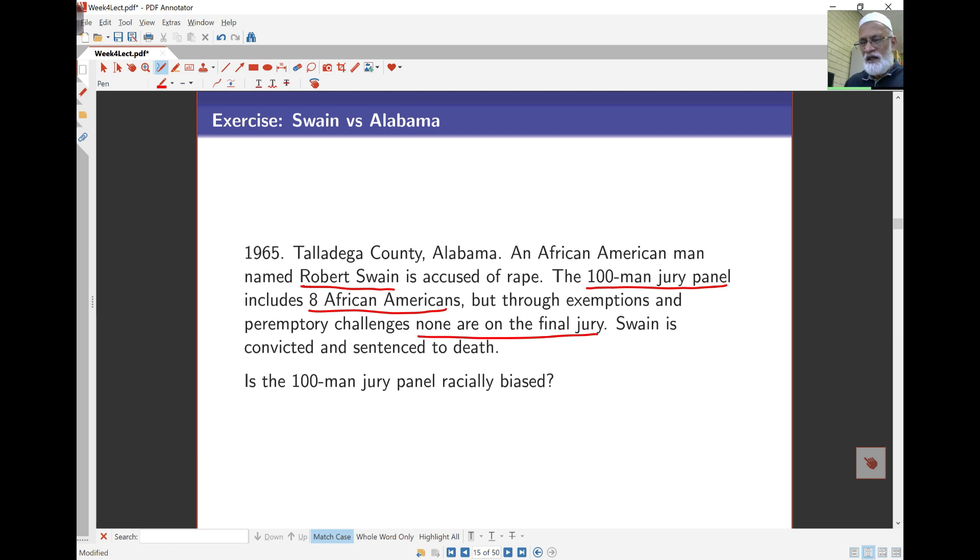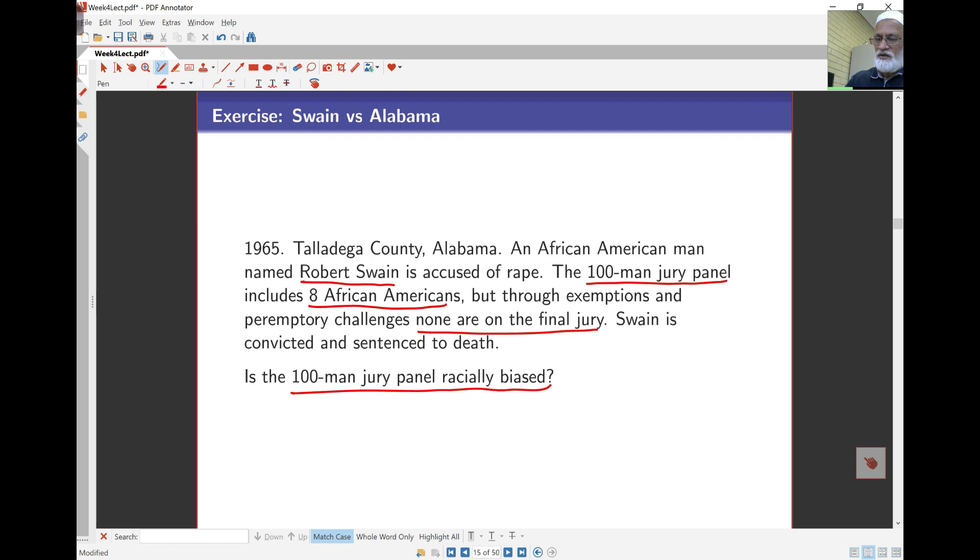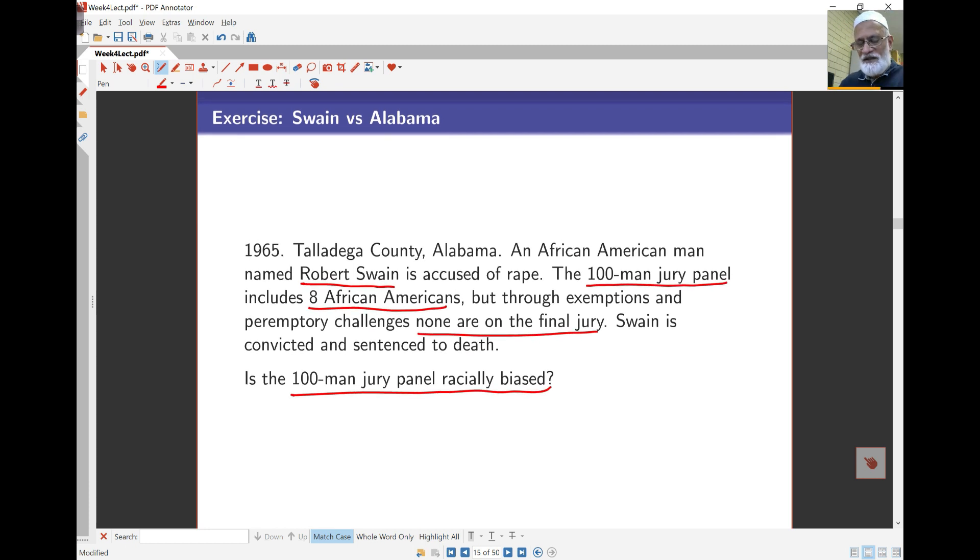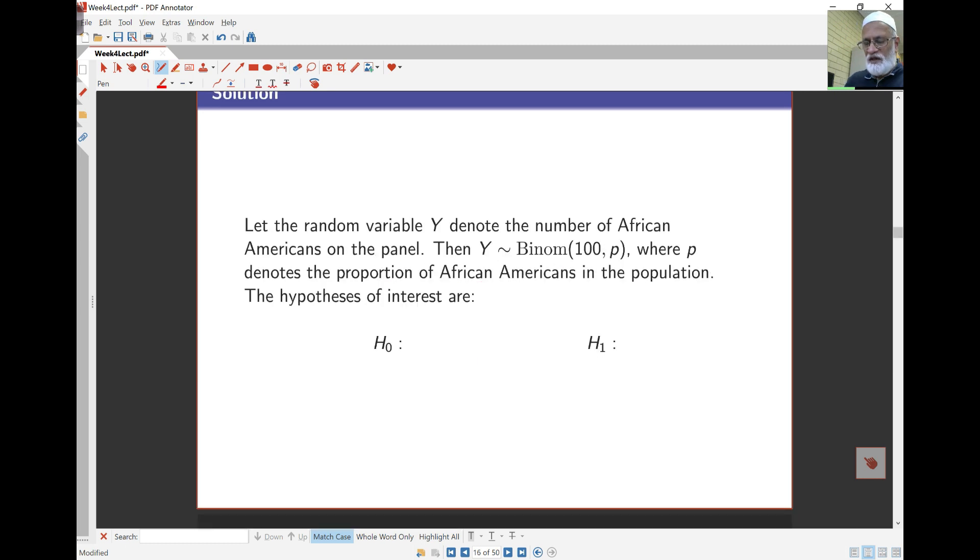Through exemptions and peremptory challenges by the lawyers, there were no African-Americans on the final jury. Swain was convicted and sentenced to death. The question, which was widely publicized, is: is this 100-man jury panel racially biased? Let Y be the random variable that denotes the number of African-Americans on the panel. Then Y is binomial with n=100 and p, where p denotes the proportion of African-Americans in the population.